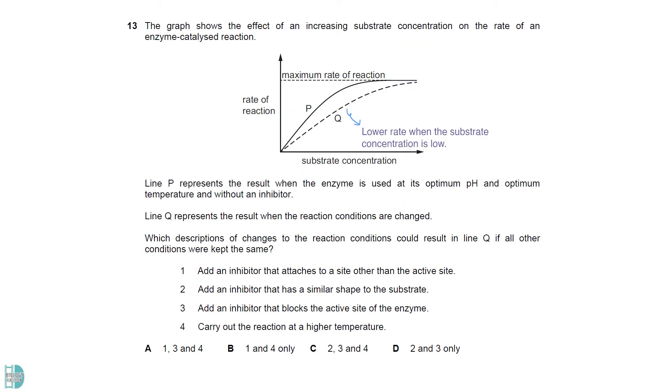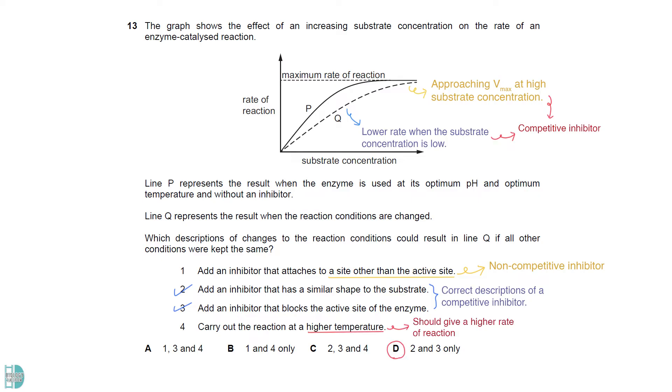Q shows a lower rate of enzymatic reaction when substrate concentration is low. However, it approaches Vmax at high substrate concentration. So this is a line when the competitive inhibitor is present. 2 and 3 are the descriptions of competitive inhibitors. 1 is for non-competitive inhibitor since it doesn't bind to the active site. 4 is wrong because a higher temperature should increase the rate of reaction rather than cause a decrease.